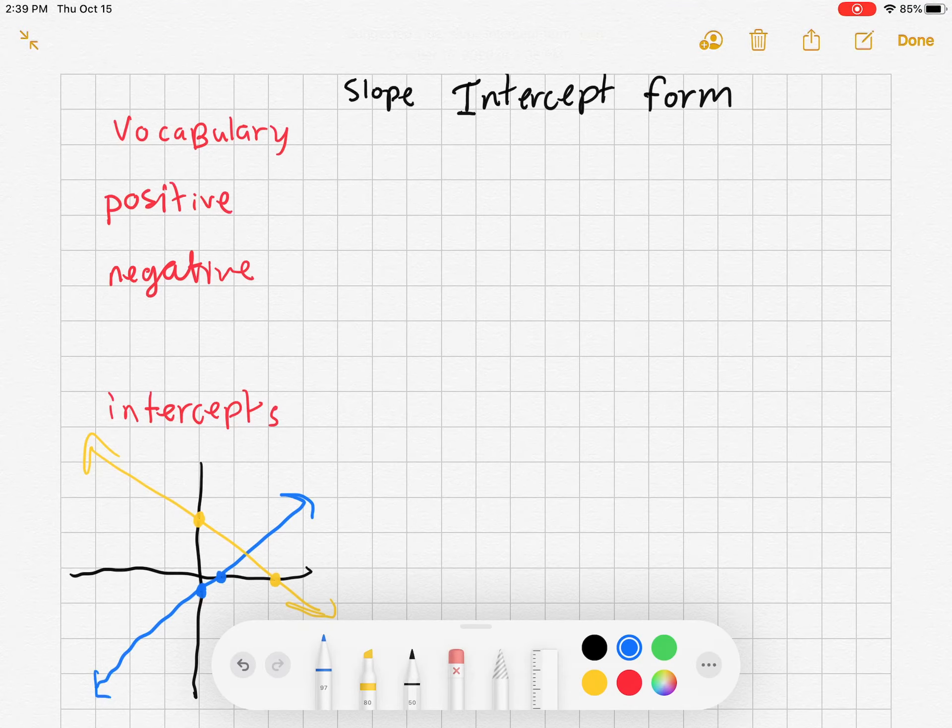First, a positive slope. Well, that's obviously going to be bigger than zero. And when you look at it from left to right, you'll notice that it looks like it's pointing up.